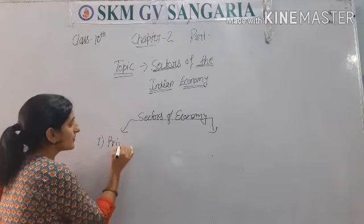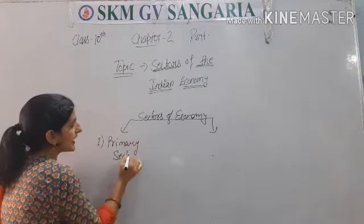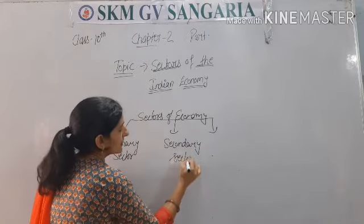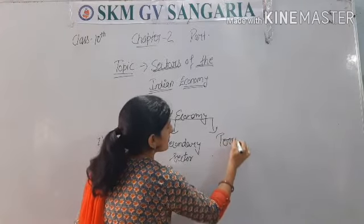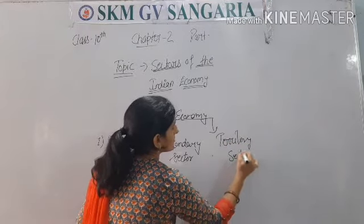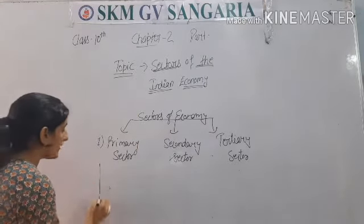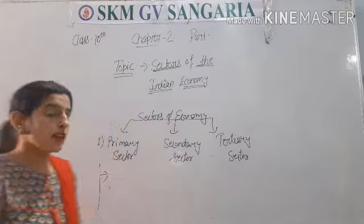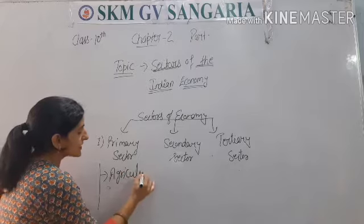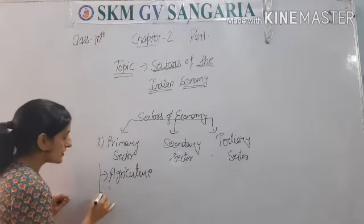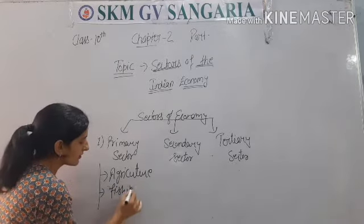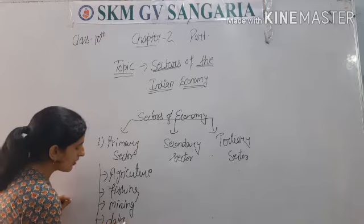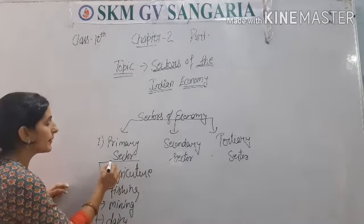The first is the primary sector. The second is the secondary sector. And the third is the tertiary sector. The primary sector is that sector in which primary activities take place. For example, agriculture is included in the primary sector. The second is fishing, then mining, then dairy — all these activities are included in the primary sector.